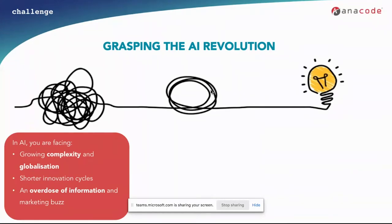Third point: overdose of content and information. I think that's something everybody experiences at the moment, not just in AI. In AI specifically, we also have the problem that AI is very prominent on the marketing level, so we see a lot of marketing buzz which can be very generic and very positive, but it doesn't really provide a lot of information about the substance behind specific companies or use cases. In general, especially when you try to get into a new field, it can be very difficult to evaluate the quality of specific content, so it's very easy to get lost in an overdose of information.